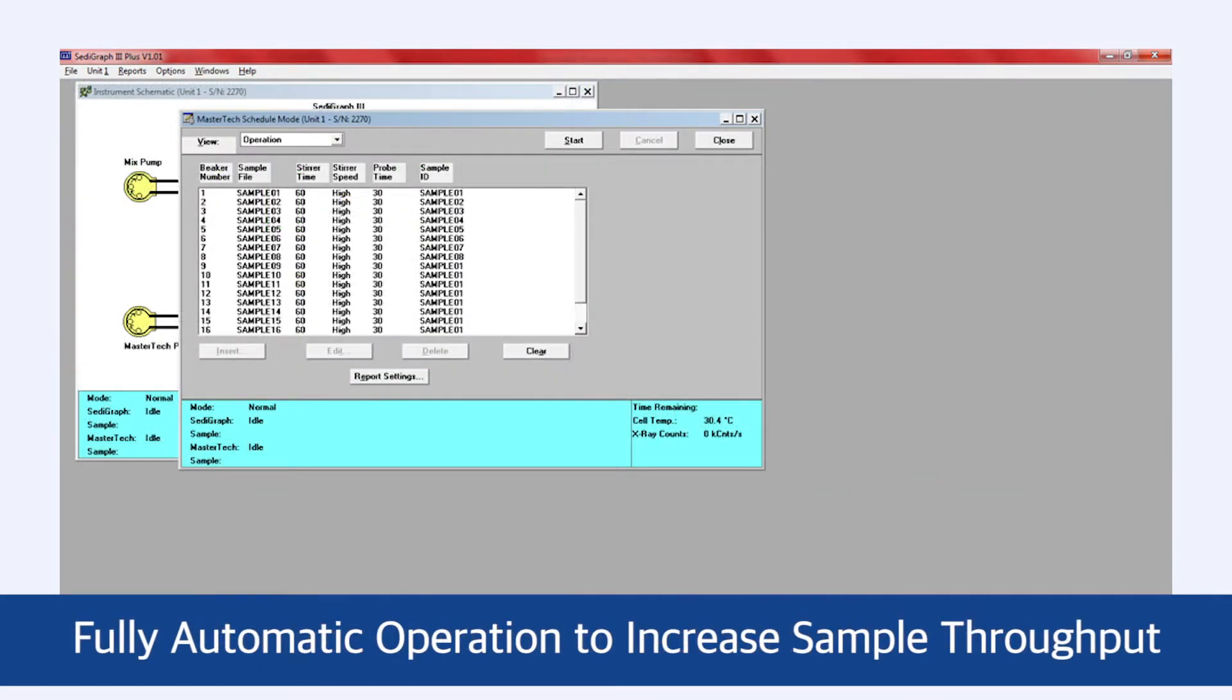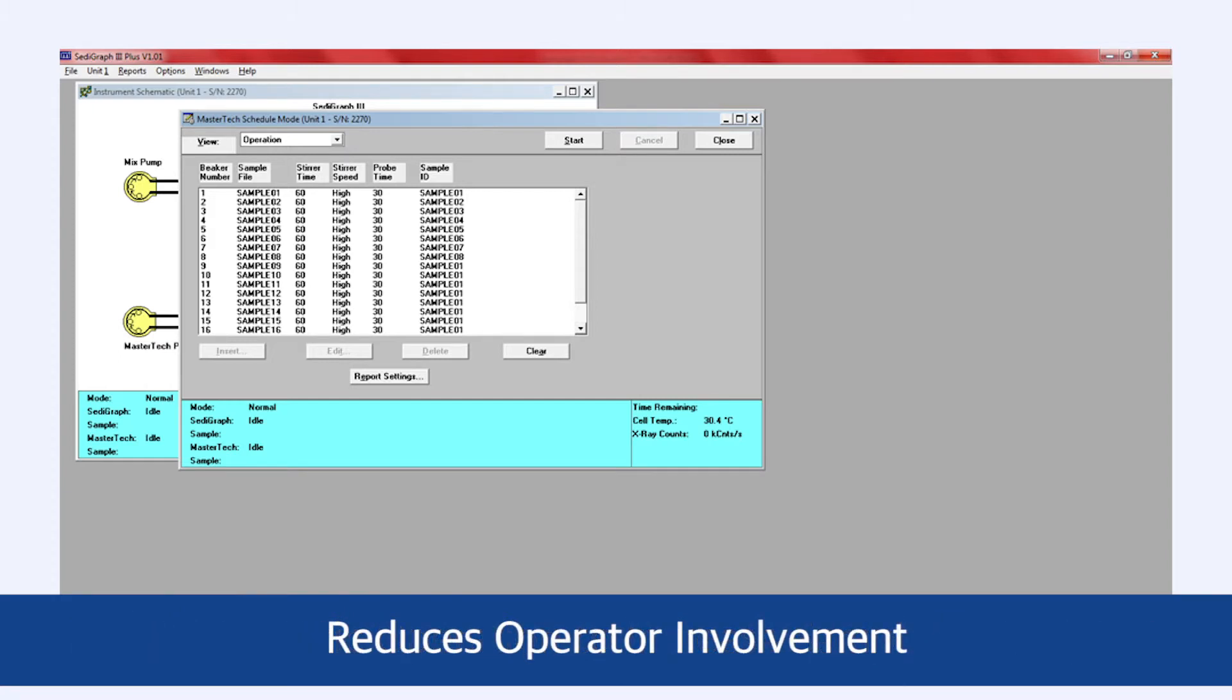The fully automatic operation increases sample throughput and reduces operator involvement in addition to reducing the opportunity for human error.